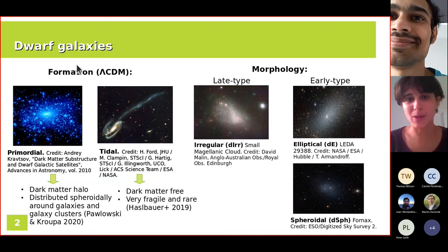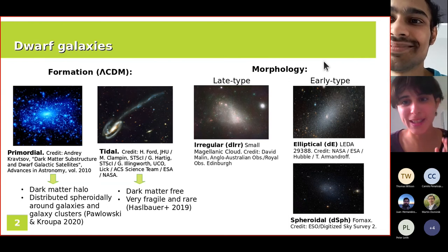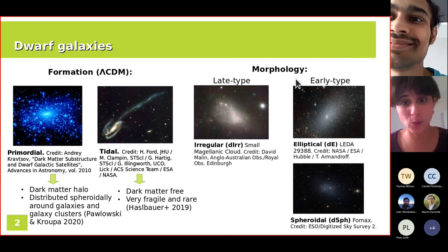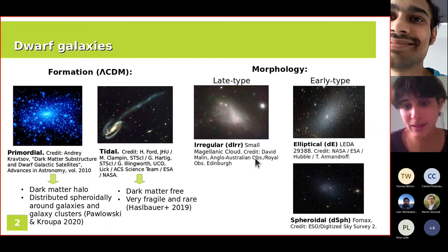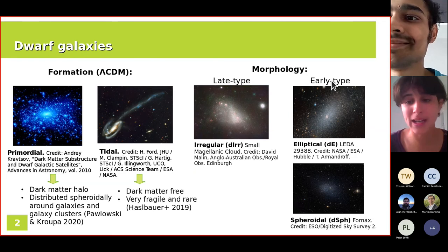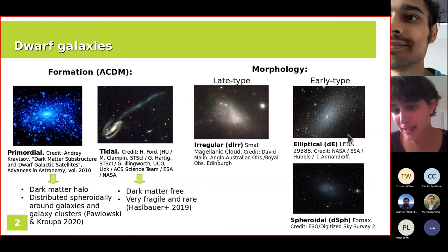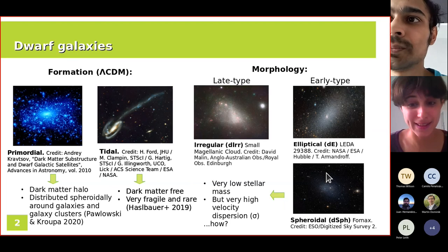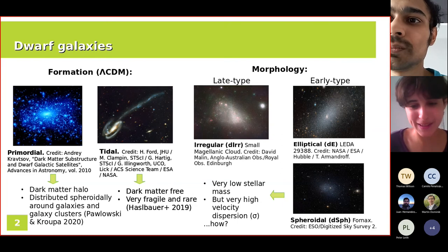We can also classify dwarf galaxies by morphology. Late-type dwarf galaxies have active star formation and include irregular dwarves. Early-type dwarf galaxies have no active star formation and include dwarf ellipticals and dwarf spheroidals. A particularity of spheroidal galaxies is that they have very low stellar mass but very high velocity dispersion.